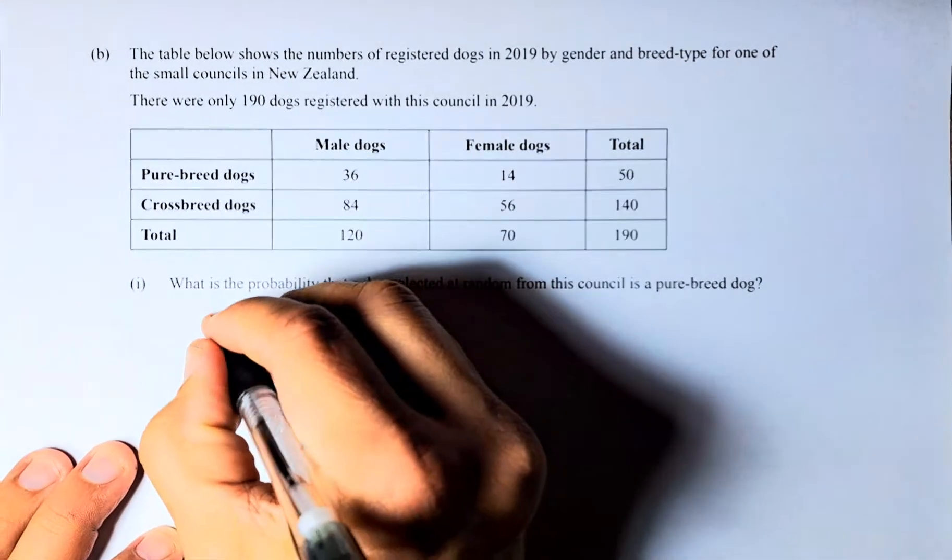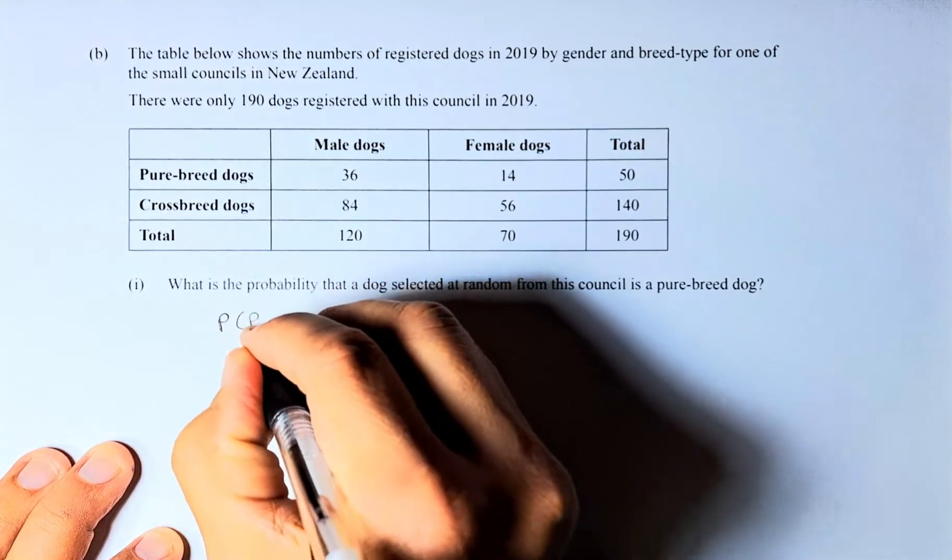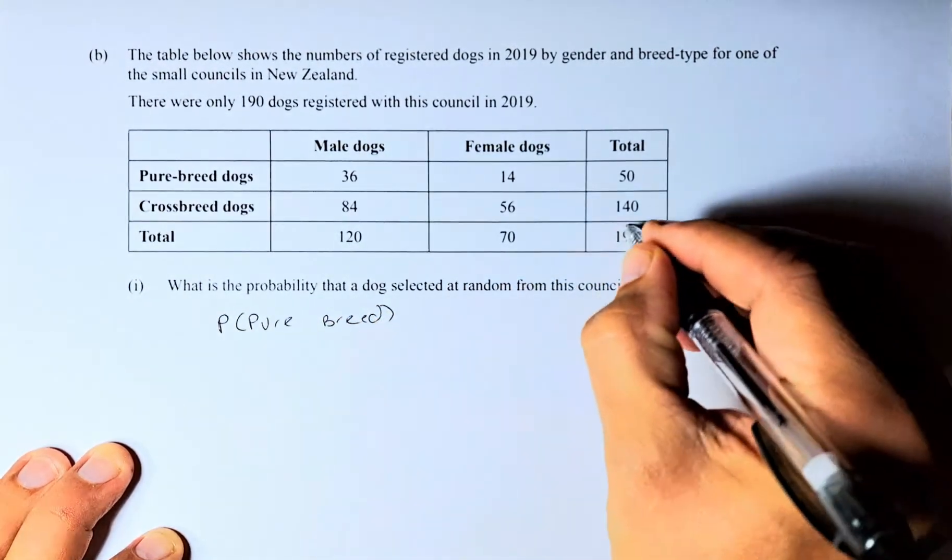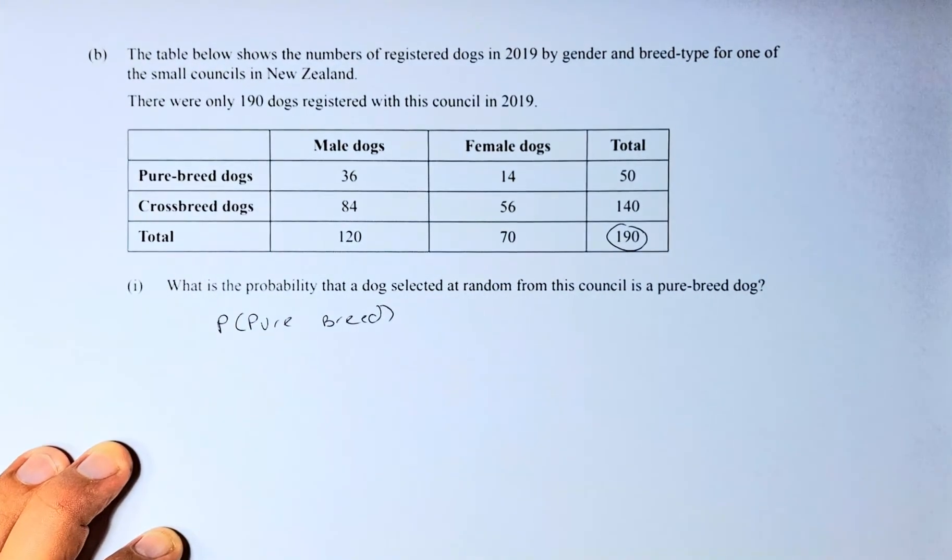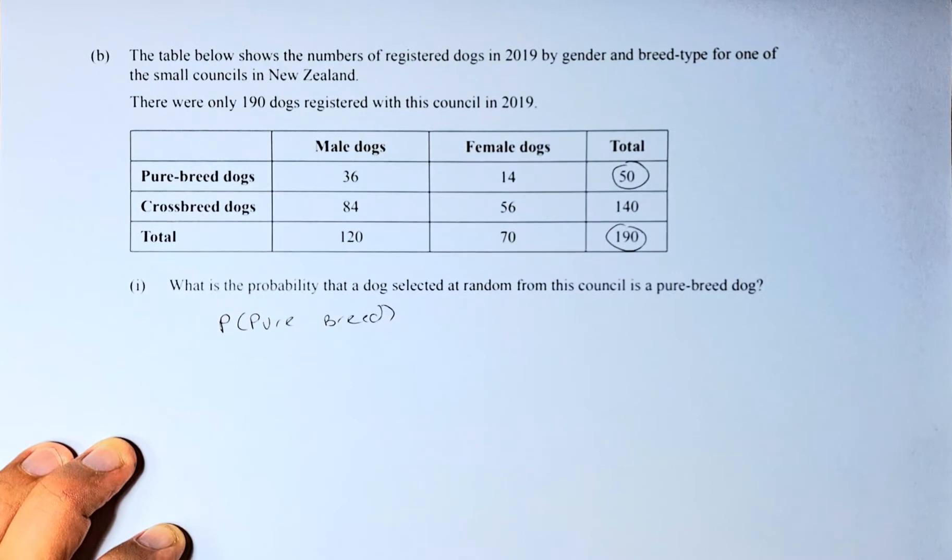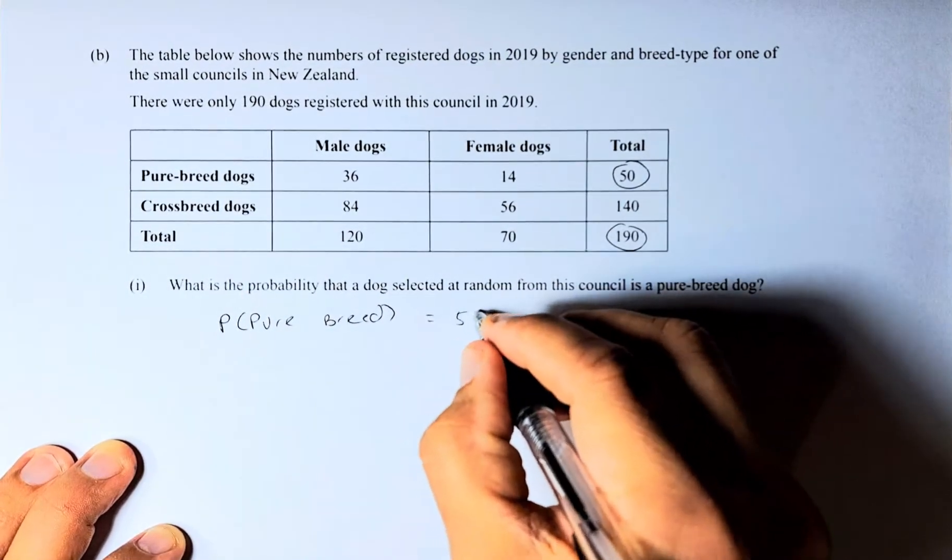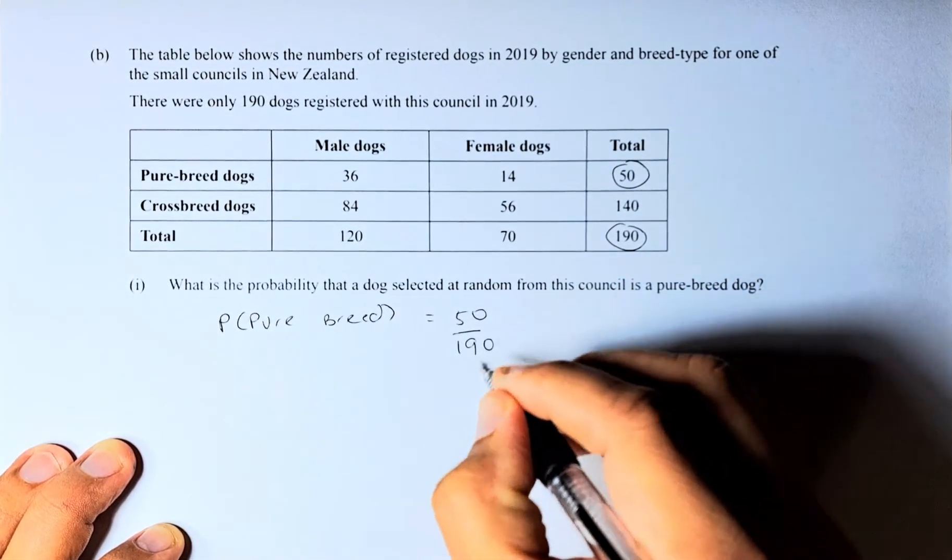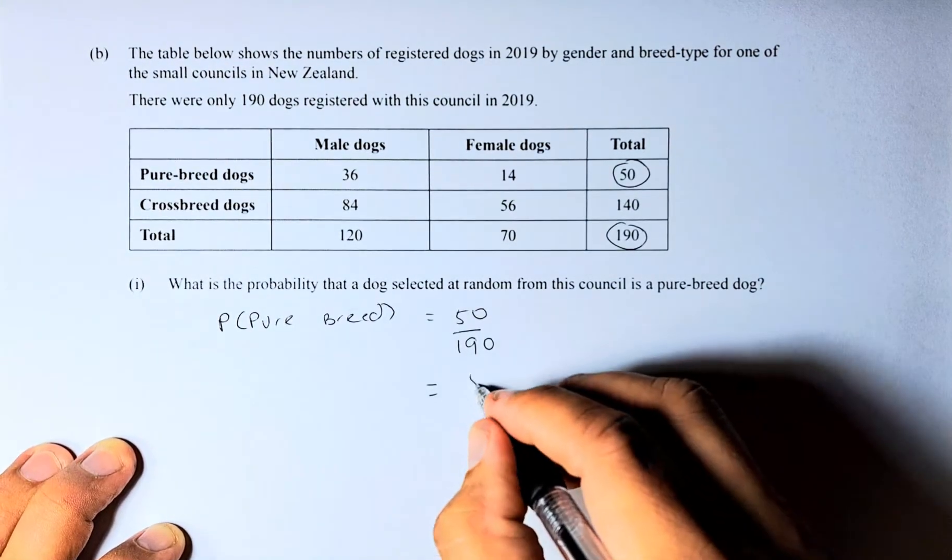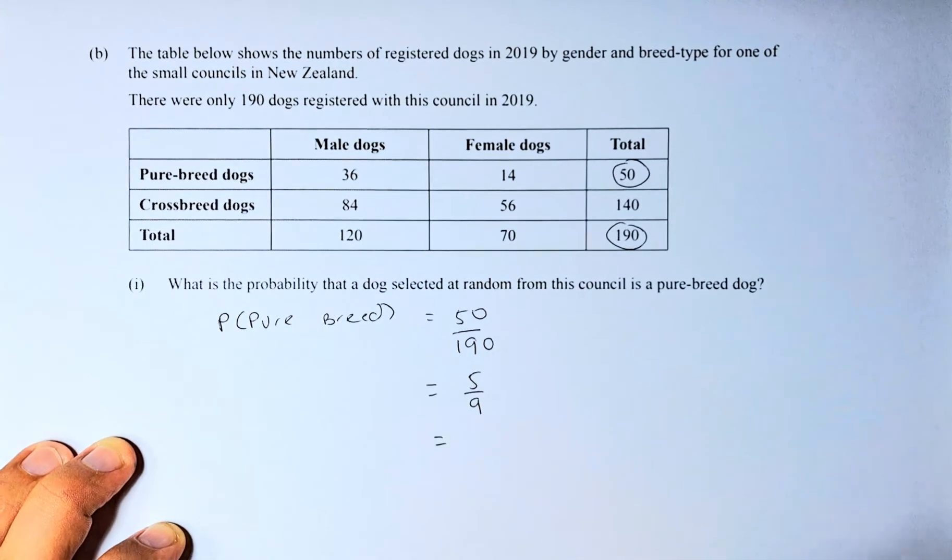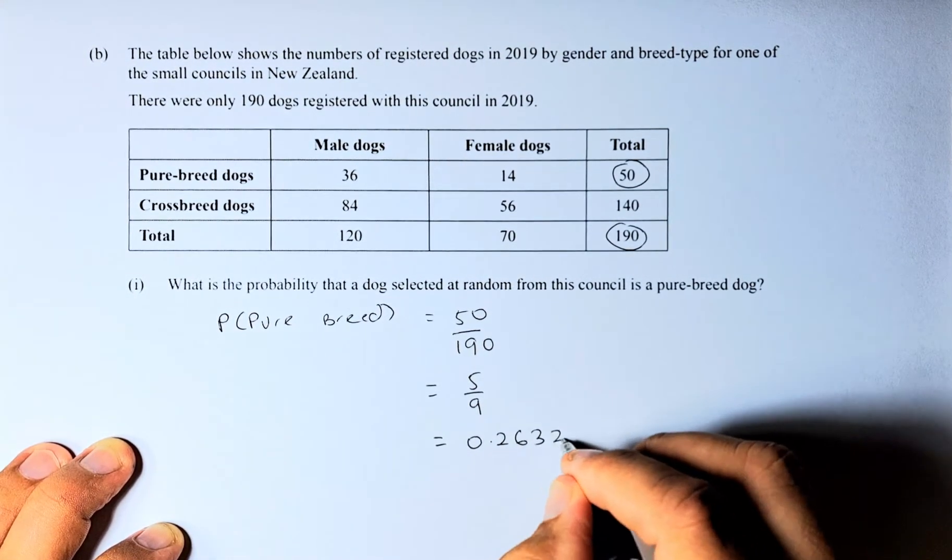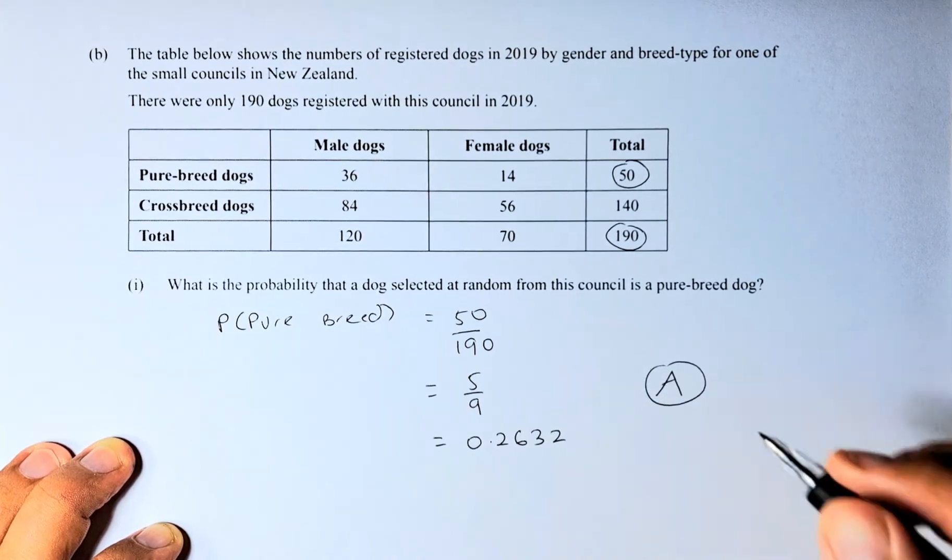So you write the equation, probability of pure breed. So they are altogether 190, and the pure breed dog is going to be 50. So the probability is going to be 50 out of 190. If you simplify them, it's going to be 5 over 19. And if you decide to do in decimal, the answer is 0.2632. And that is a simple achieve.